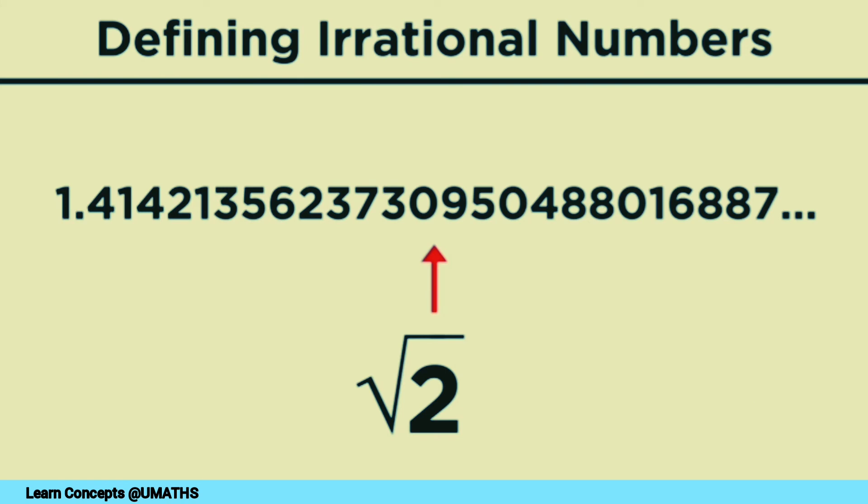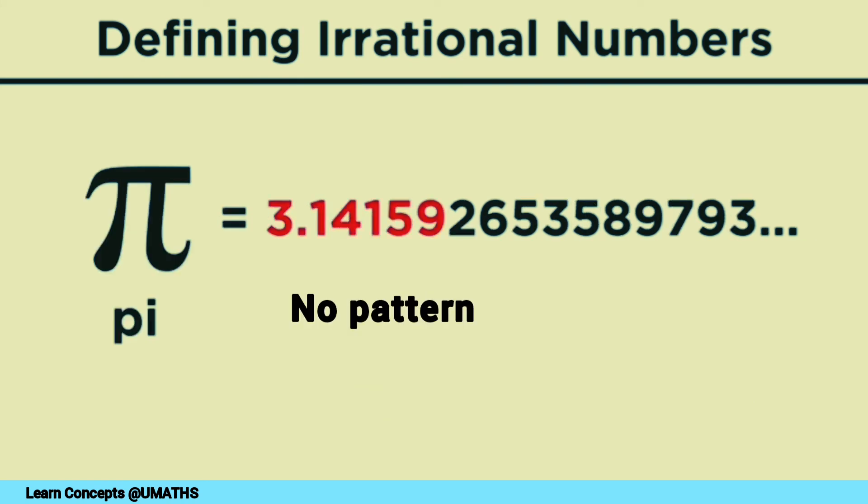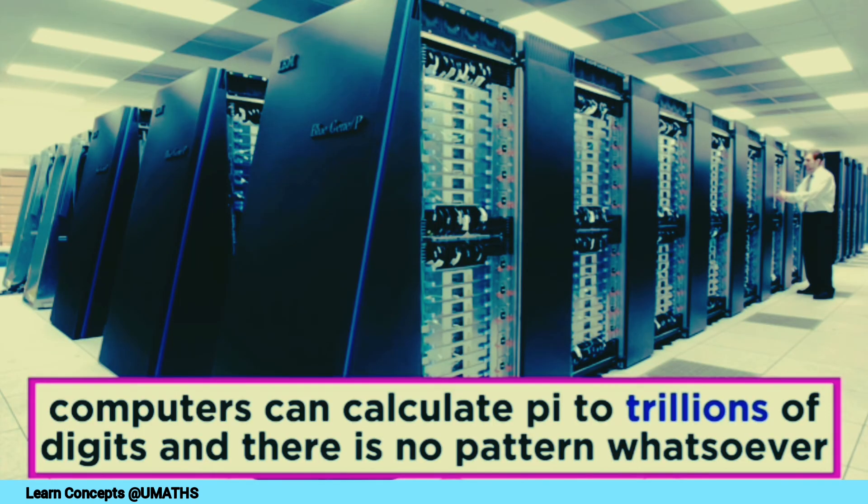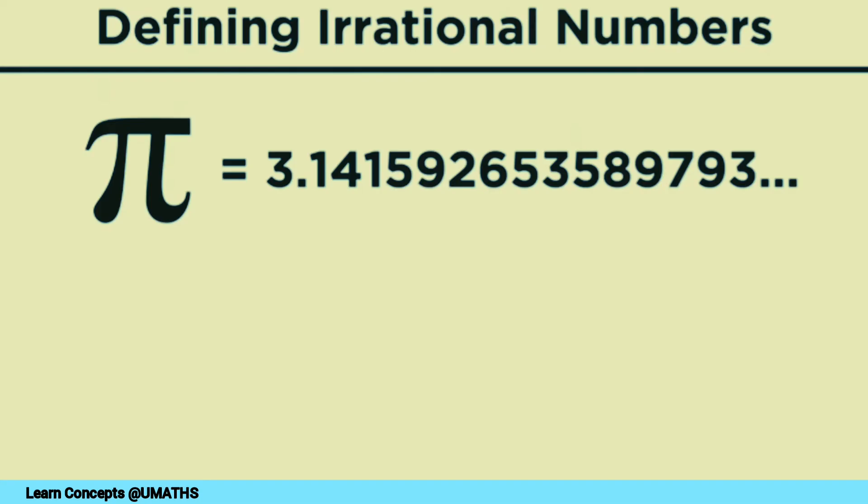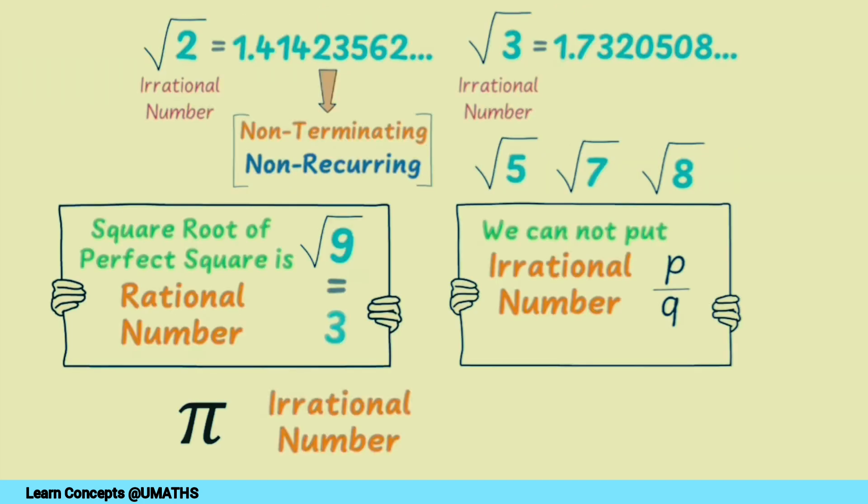We also remember that pi is an important irrational number. Computers can calculate pi to trillions of digits, and there is no pattern. It gives you an irrational number.